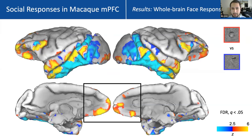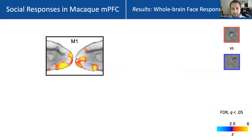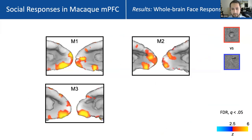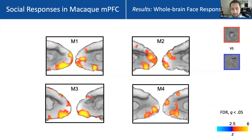This result is from one monkey. If I zoom in on the mPFC and look at results in the other animals, we see a consistent result in the second, third, and fourth animals that we scanned.